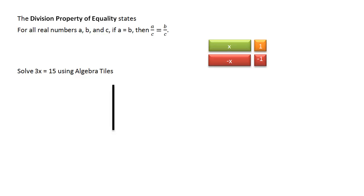The division property of equality says that for all real numbers A, B, and C, if A is equal to B, then when you divide the left side of the equation by C, you must also divide the right side of the equation by C.